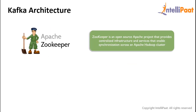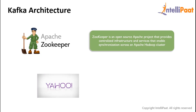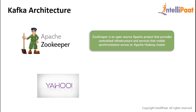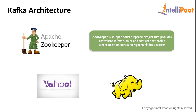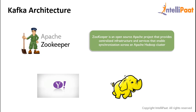Now let's look at ZooKeeper. ZooKeeper is an open source Apache project that provides centralized infrastructure and services that enable synchronization across an Apache Hadoop cluster. Developed originally at Yahoo, ZooKeeper facilitates synchronization among processes by maintaining a status on ZooKeeper servers that store information in local log files. The ZooKeeper servers are capable of supporting a large Hadoop cluster. Kafka brokers coordinate with each other using ZooKeeper. Producers and consumers are notified by the ZooKeeper service about the presence of new brokers or about the failure of a broker in the system.